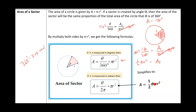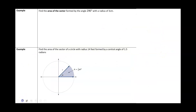Instead of memorizing the formulas, I recommend memorizing the proportion: theta over 360 equals area of the sector over pi r squared, or theta over 2 pi equals area of the sector over pi r squared. That's how I will work problems out, because understanding is a lot better than memorizing.